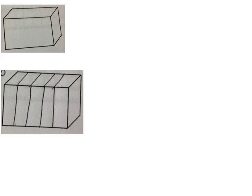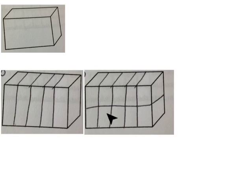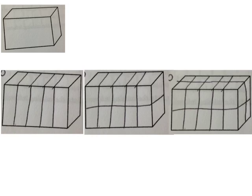Now we're going to draw the different layers together. First, we start with an empty rectangular prism. Then we draw vertical lines to show the 5 layers of 4 cubes — kind of like bread slices, slicing our rectangular prism. Next, we draw a horizontal line that might remind us of the layers in a cake. Finally, we draw a horizontal and a vertical line to show the front layers and the back layers of our rectangular prism.